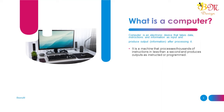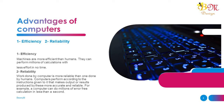Advantages of computers. 1. Efficiency: Machines are more efficient than humans. They can perform millions of calculations with less effort and in no time. 2. Reliability: Work done by a computer is more reliable than work done by humans. Computers perform according to the instructions given, making output more accurate and reliable. For example, a computer can do millions of error-free calculations in less than a second.